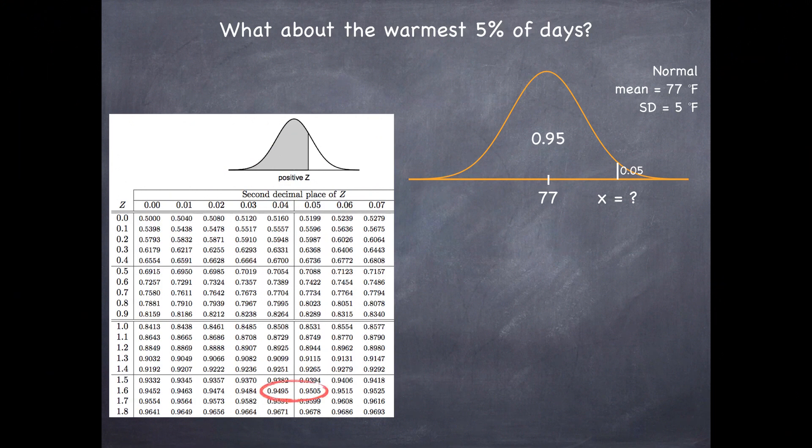It looks like these two values 0.9495 and 0.9505 are equally distant from 0.95. You really can pick either one of them to work with. I'm just going to pick the higher one here. Go to the edges of the table and grab the associated z-score 1.65.